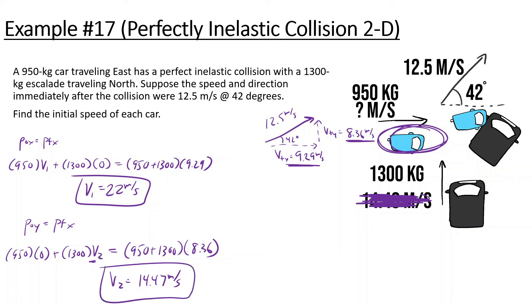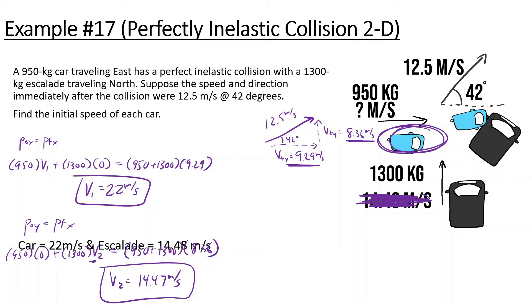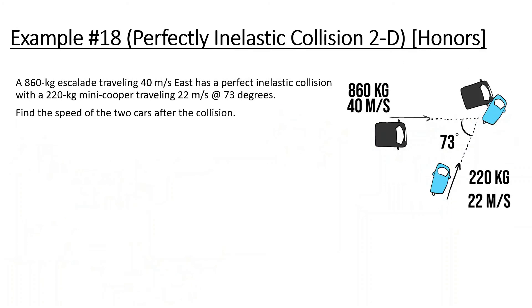We see that the Escalade was going slower at 14.47 meters per second. We're going to do one last problem — this one's a bit harder, but if you can do this one you should be good with the whole topic of 2D perfectly inelastic collisions.